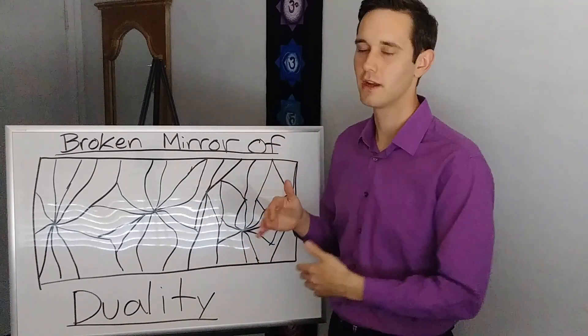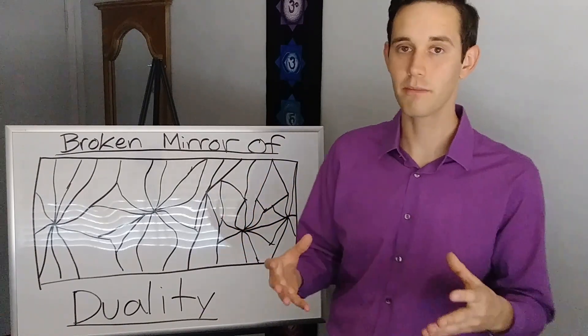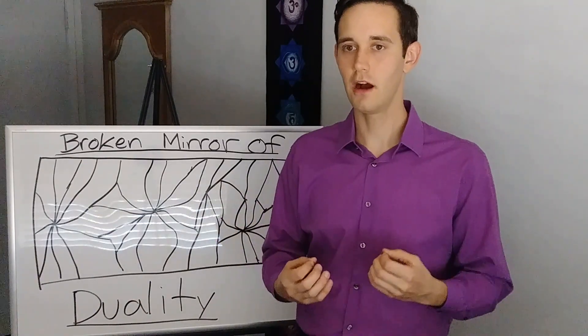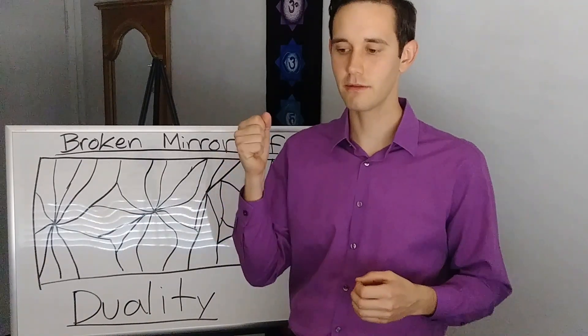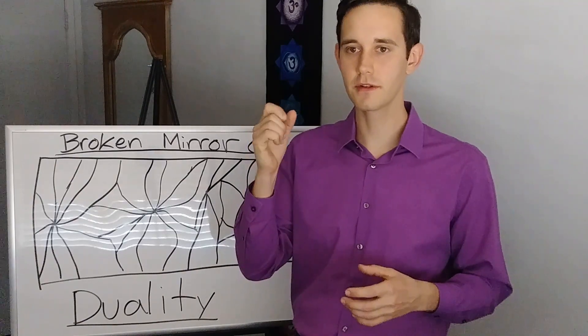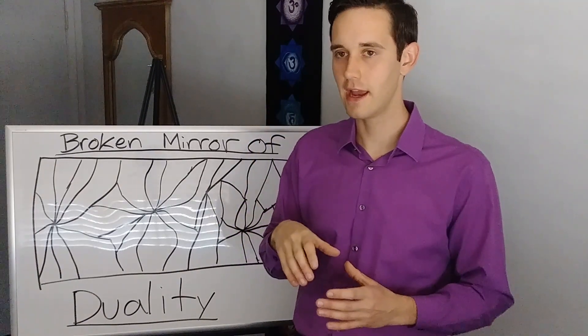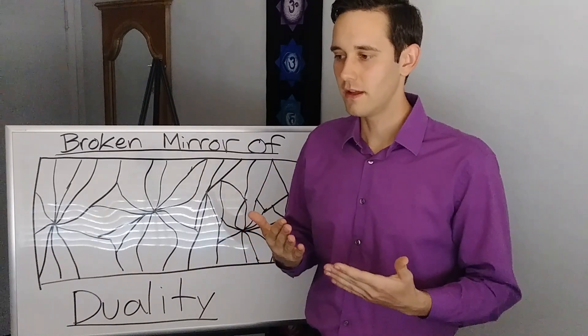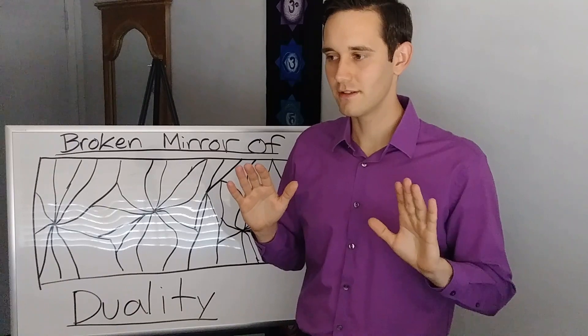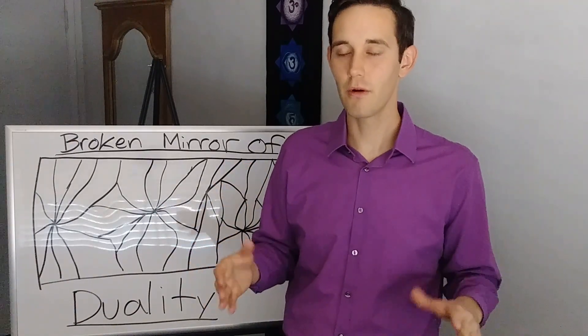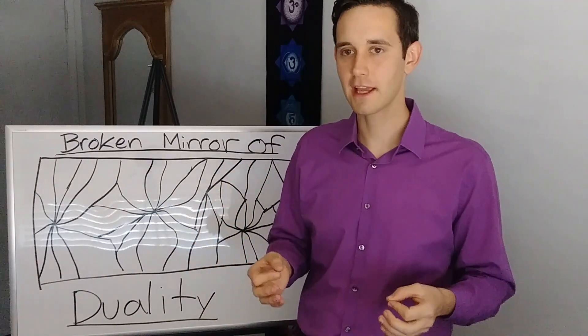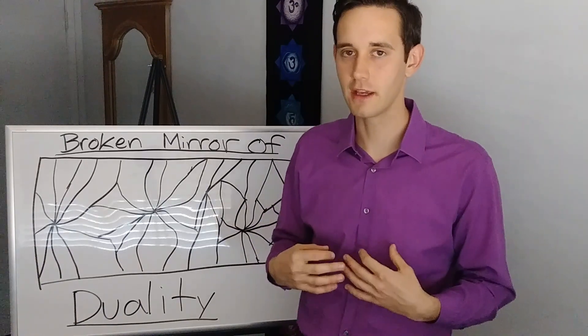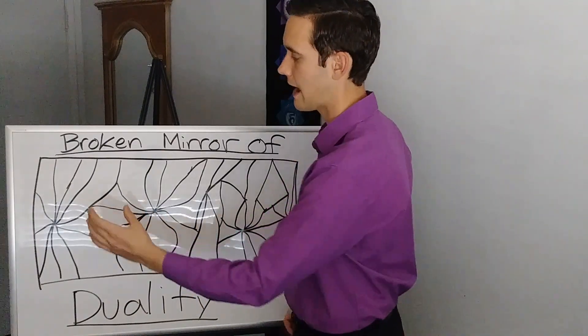Where this consciousness is this giant mirror and we are a part of this giant mirror. And in duality, consciousness becomes broken and it becomes segmented and sharded. It becomes a separate piece that can be moved and taken about.